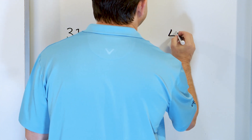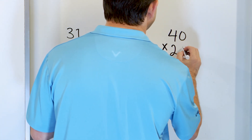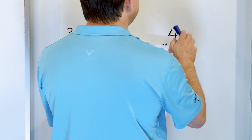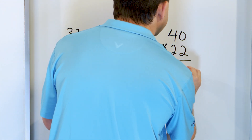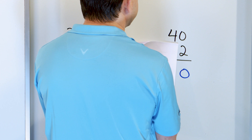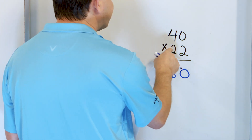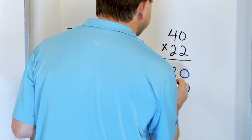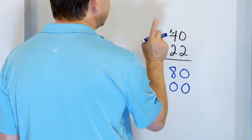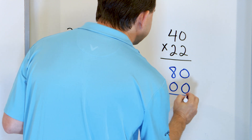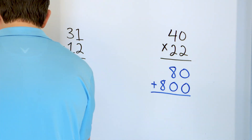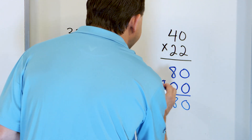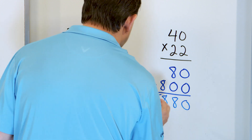Last problem: 40 multiplied by 22. Cover up this left 2. 2 times 0 is 0 — give ourselves a little bit of space. Then 2 times 4 is 8, which goes right next door. Now I multiply by this 2, so I add a single 0. Then 2 times 0 is 0, and 2 times 4 is 8, which goes right here. Then I add: 0 plus 0 is 0, 8 plus 0 is 8, and 8 plus 0 is also 8. So I get 880.